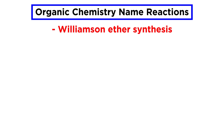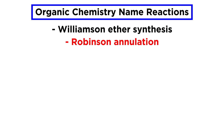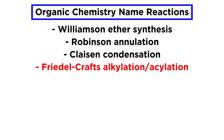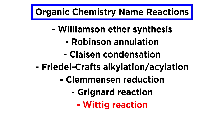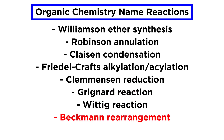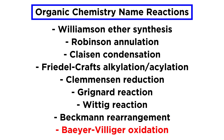We've already talked about Williamson ether synthesis, Robinson annulation, Claisen condensation, Friedel-Crafts reactions, Clemmensen reduction, the Grignard reaction, the Wittig reaction, Beckmann rearrangement, and Baeyer-Villiger oxidation. These are all named after chemists. And now, for the next significant portion of this series, we are going to investigate many more important name reactions.